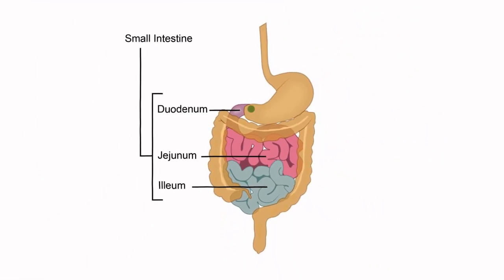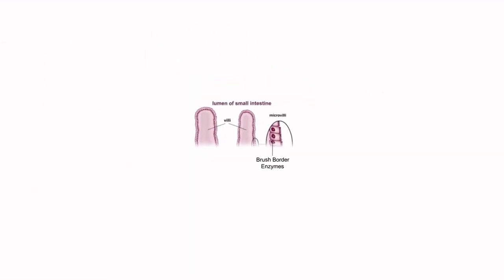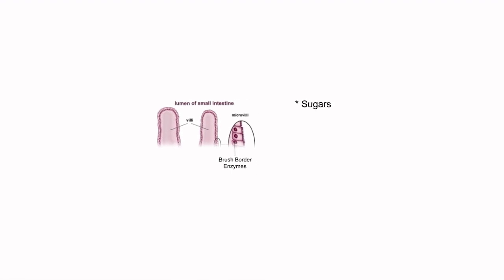The chyme, after being neutralized and further broken down, flows into the jejunum. The jejunum is the second section of the small intestine, and this is where most absorption occurs. Its lining is highly folded into villi and microvilli, containing brush border enzymes that perform any final digestion before nutrients are absorbed. The high folding increases surface area for maximum absorption of sugars, fatty acids, and amino acids.